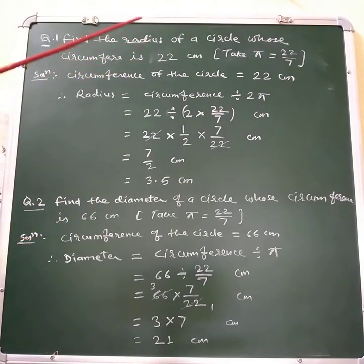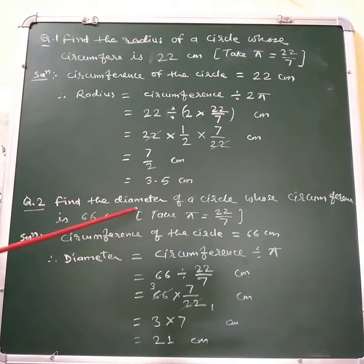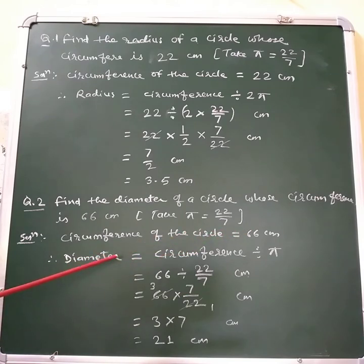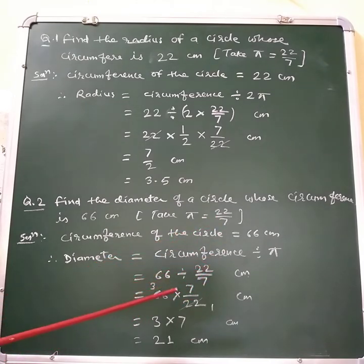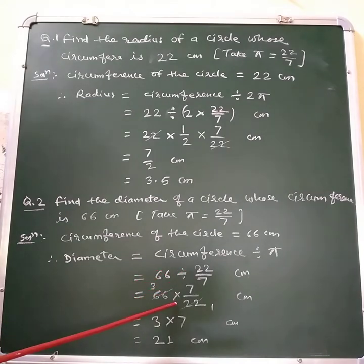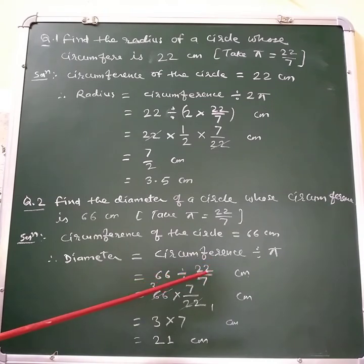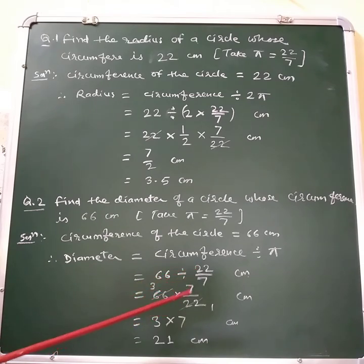The diameter of a circle is equal to circumference divided by π. Now the circumference of the circle is 66 centimeters and the value of π is 22/7. To convert the division sign into multiplication, we reciprocate the number. The reciprocal of 22/7 is 7/22, so it becomes 66 multiplied by 7/22.